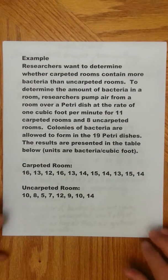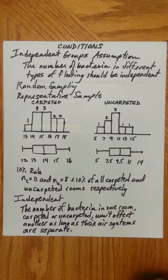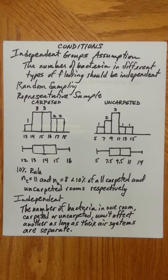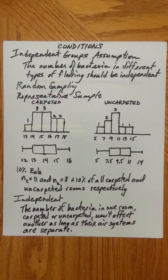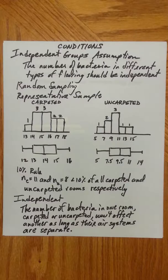First let's go ahead and check conditions. For the independent groups assumption, the number of bacteria in the different types of flooring should be independent — that's okay. For a representative sample, what we want to do is put all the values from the carpeted rooms into one list, all the values from the uncarpeted rooms in another list, and go ahead and do either a histogram, a normal probability plot, or a box plot, and just look to see that it's relatively normal.